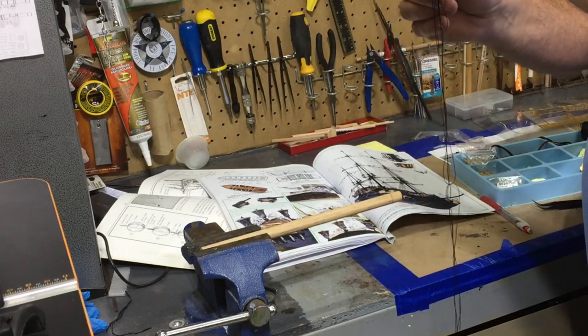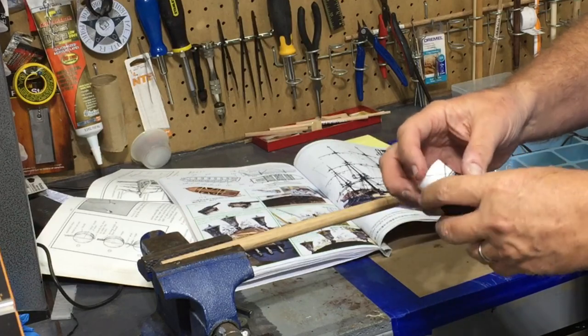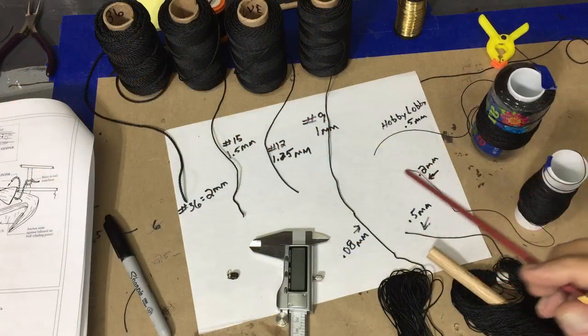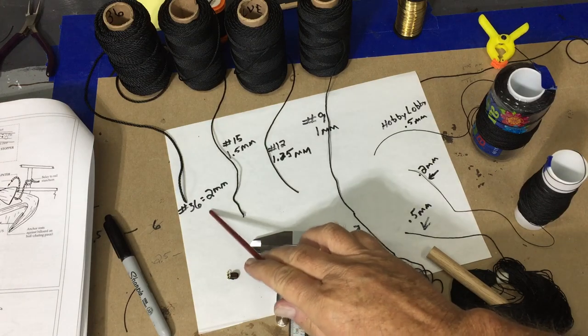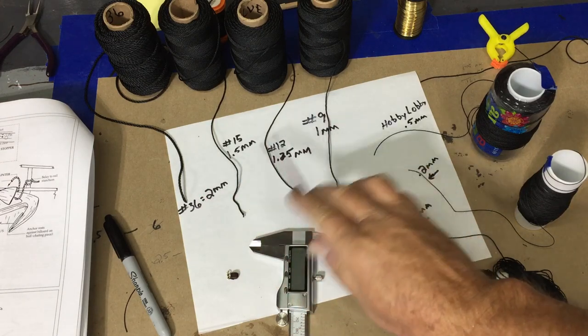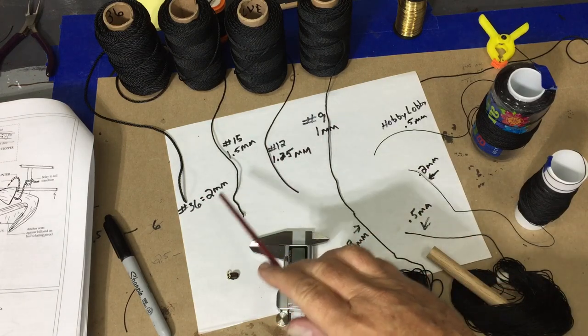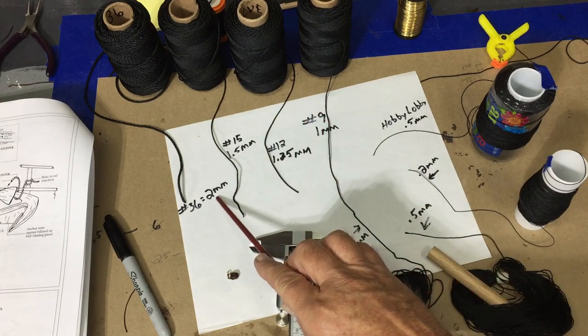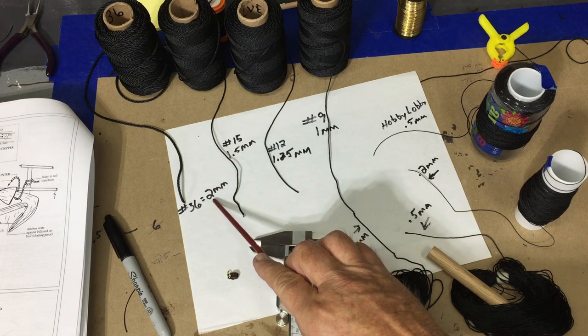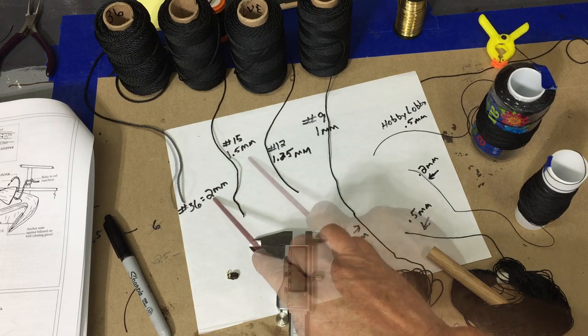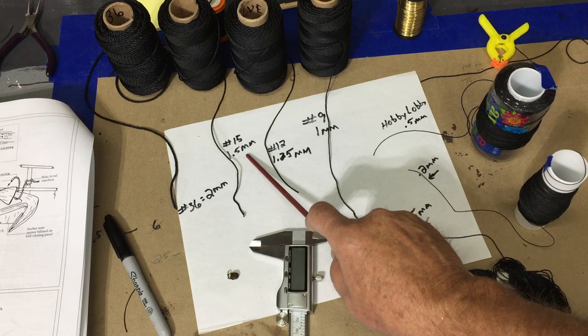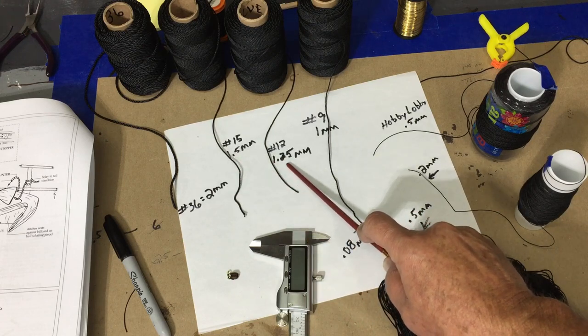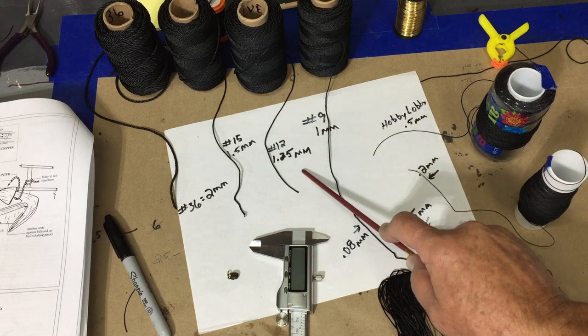I wanted to get back and clarify the tarred twine that I ordered and how well it's going to or not going to work with this particular ship. The thickest is two millimeters—that's a little heavy for this ship in my opinion. Number 15 is 1.5 millimeters. That's a possibility, as is the 1.5 millimeter, which is the number 12. But the one that I actually will use for sure is the number nine. It's one millimeter.